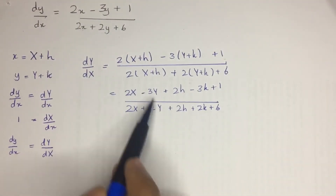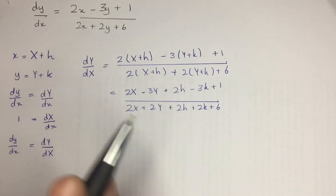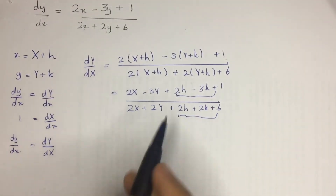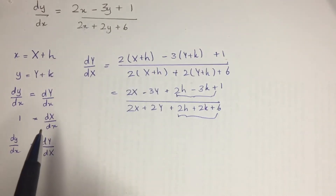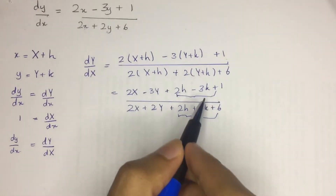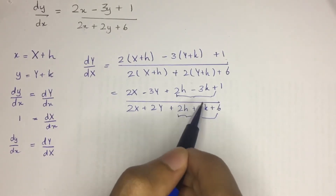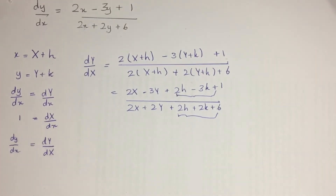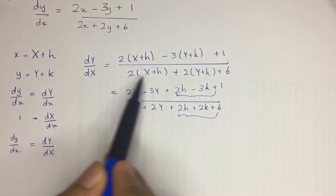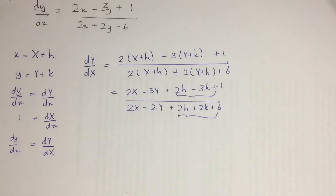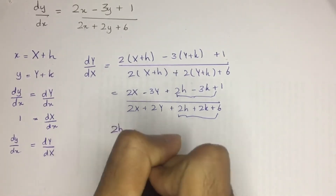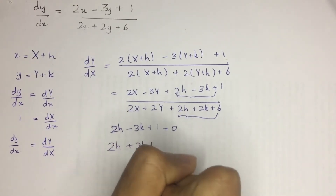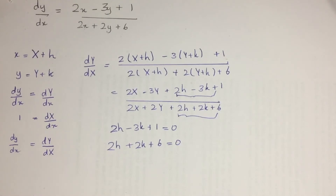To convert this to a homogeneous type equation, we need to make the constant parts equal to zero. We set up two simultaneous equations: 2h minus 3k plus 1 equals 0, and 2h plus 2k plus 6 equals 0. We solve these to find h and k, whose values will eliminate the constant terms and reduce the equation to homogeneous type.